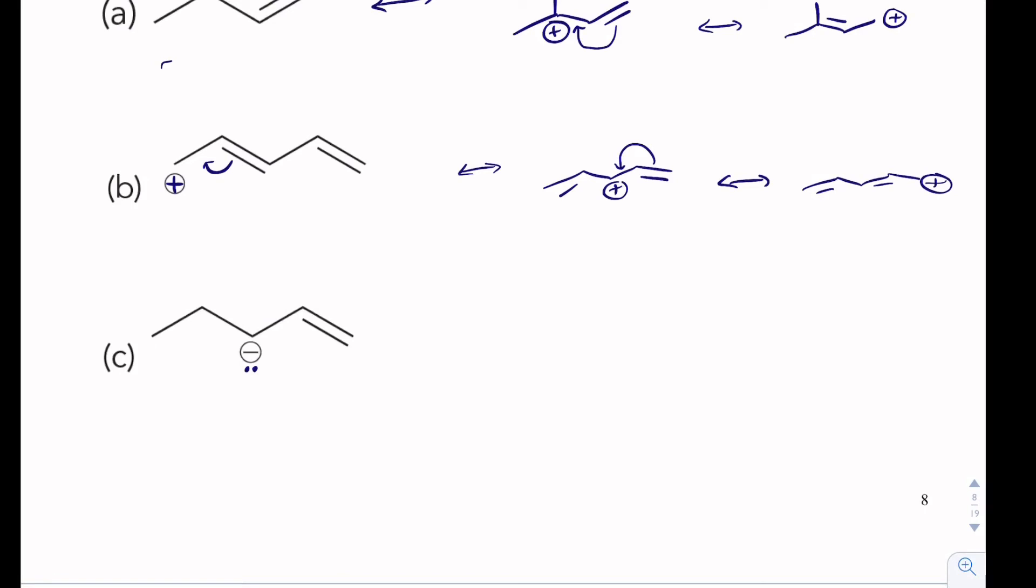Negative charges, we have a lone pair of electrons. And so we're going to start there. We're going to create a double bond. But in order to create that double bond, we have to kick out the adjacent double bond. So make a note to yourself. When you move, you're going to have two resonance arrows, and that's totally different than a positive charge.